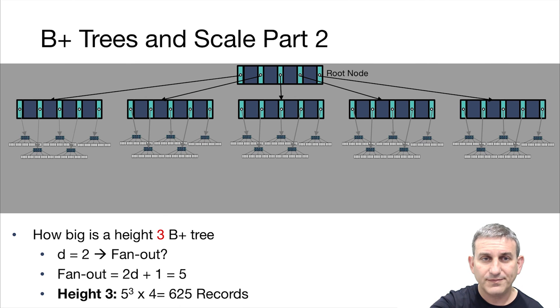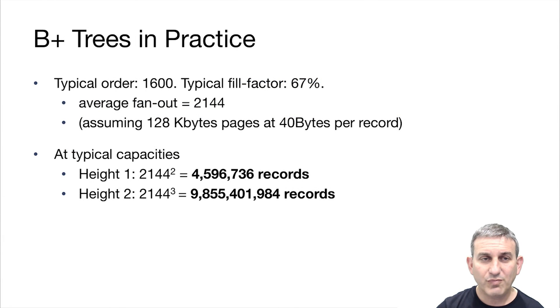But how does this play out in practice? So in practice, the typical order of a B-tree, let's say on 128 kilobyte pages, might be something like 1600 entries. Now, if you go out and you look at a B-tree in the wild, one that's been facing lots of insertions and deletions, you'll find that it's typically about two-thirds full. So the average fanout then is about 2144.